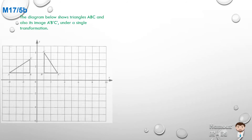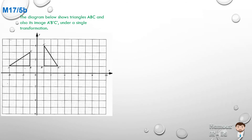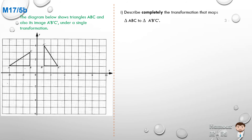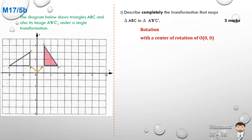May 2017, number 5B. The diagram below shows triangles ABC and also its image A'B'C' under a single transformation. Part one: describe fully the transformation that maps triangle ABC to triangle A'B'C'. We can see there is some sort of turning, so the transformation is a rotation. The center of rotation will be at the origin at (0,0), and to completely describe it we must also give the angle and the direction it turns. It turns from OB to OB', which is 90 degrees in a clockwise direction, as measured using a protractor.